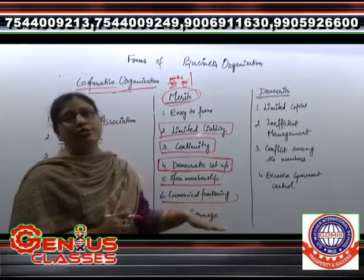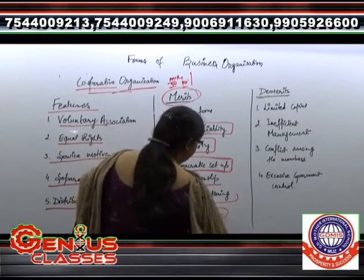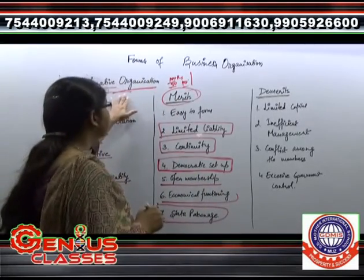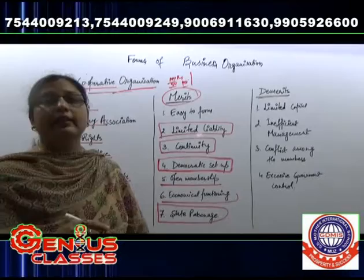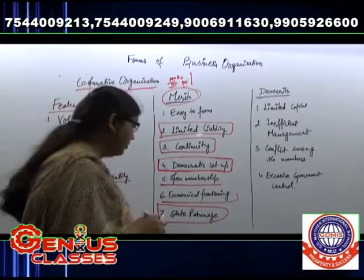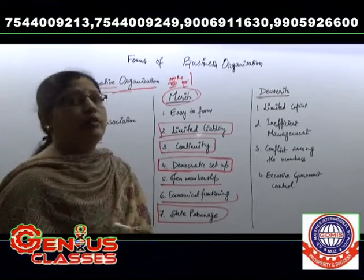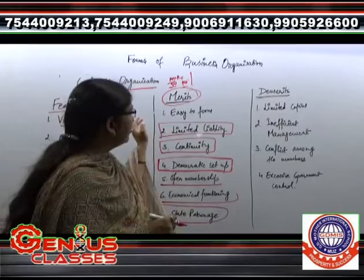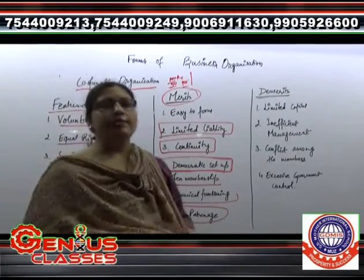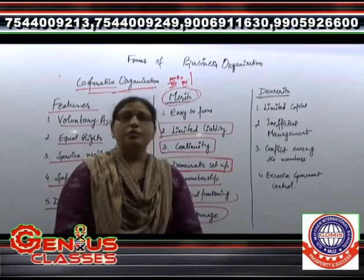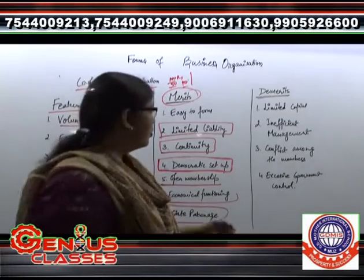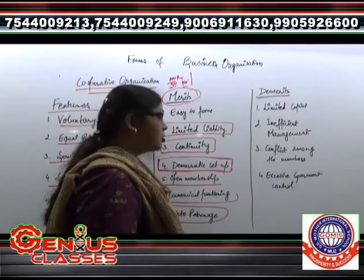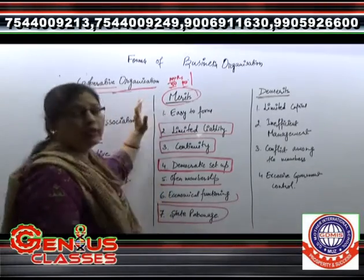We are believing in economical functioning. Next and very important merit is state patronage. State patronage means these type of organizations enjoy the benefits given by the government, such as concessions. State patronage means cooperative organizations get benefits from state government and central government. These are the seven merits of the cooperative organization.